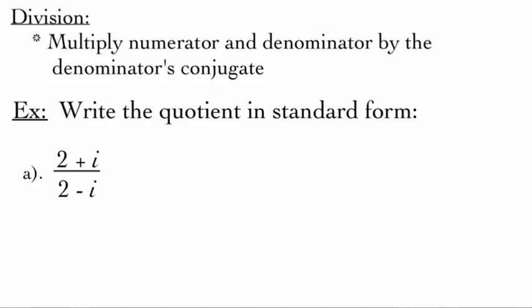When doing division problems with complex numbers, our main goal is to get things written in standard form, a plus bi. To do that, we multiply our numerator and denominator by the conjugate of the denominator.